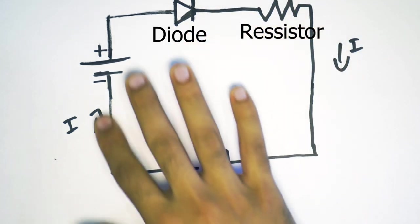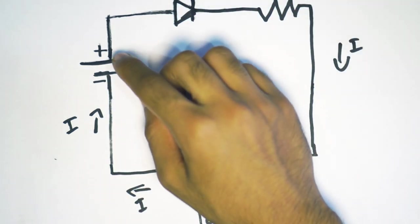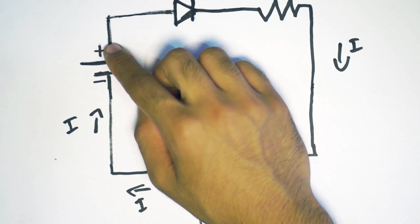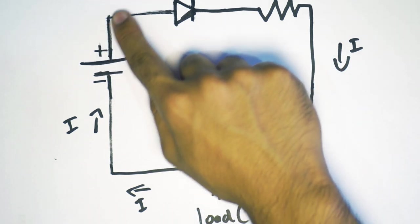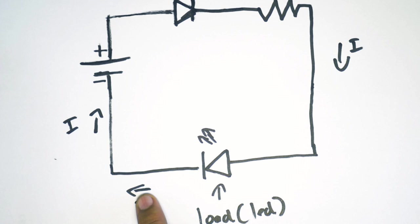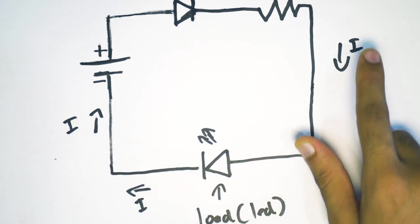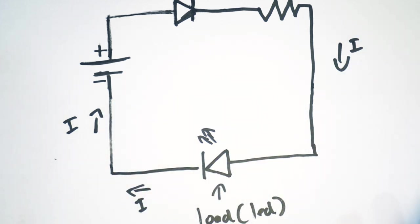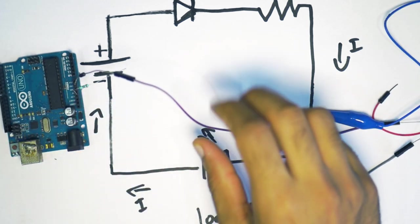The diode is here just to show the direction of the current. So as you can see, in conventional flow, the current will flow from the positive terminal to the negative terminal. So it'll flow in this clockwise direction as you can see represented by these arrows here. I stands for current. That's the symbol for current.